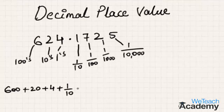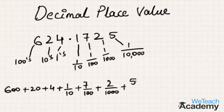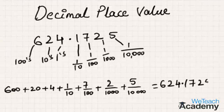7 in the 1/100th place becomes 7/100. 2 in the 1/1000th place becomes 2/1000. 5 in the 1/10,000th place becomes 5/10,000. This equals 624.1725. That was a basic introduction to decimal place value.